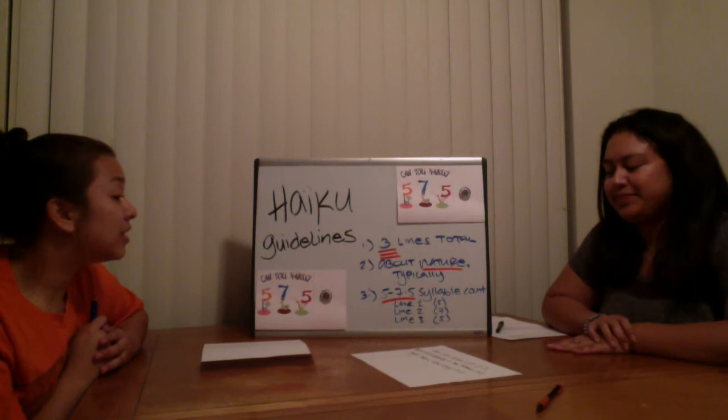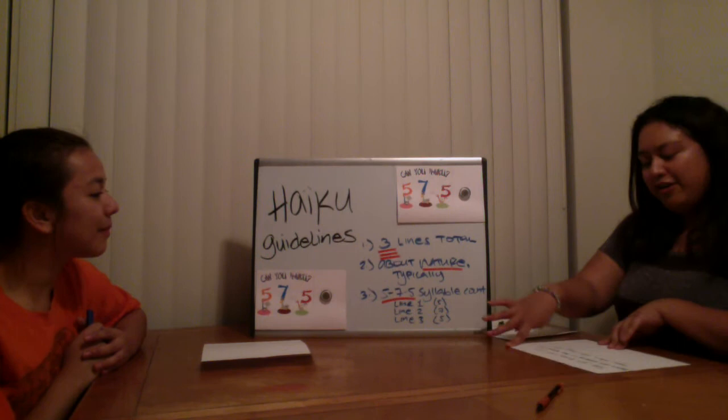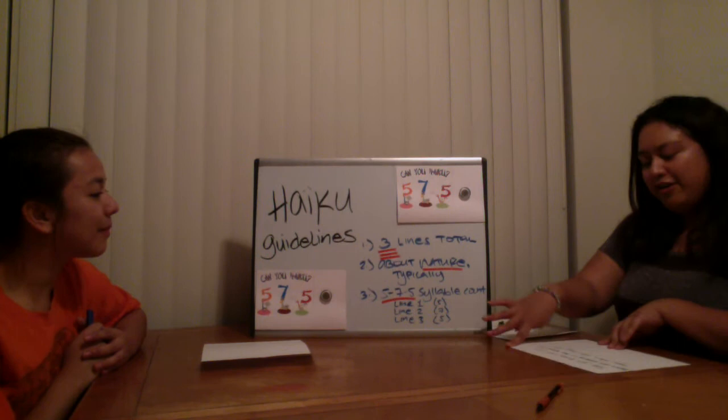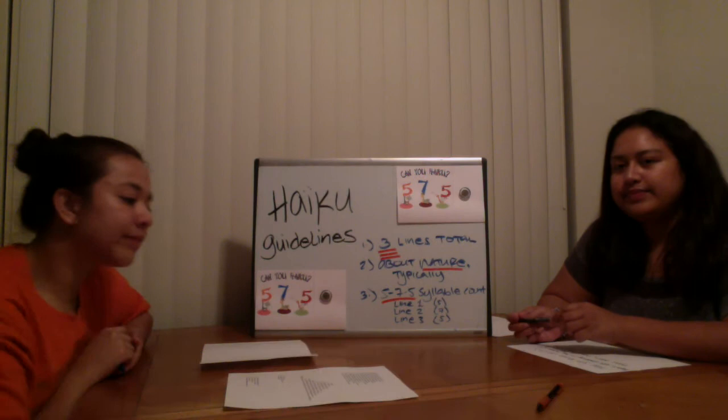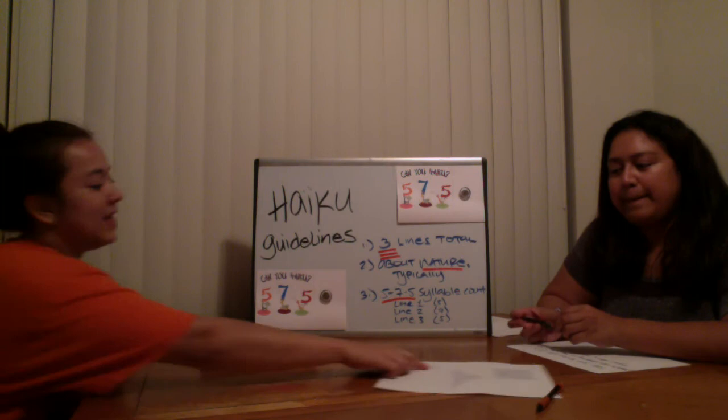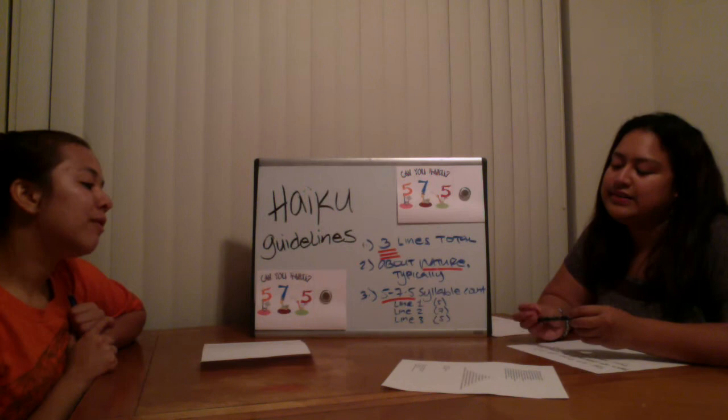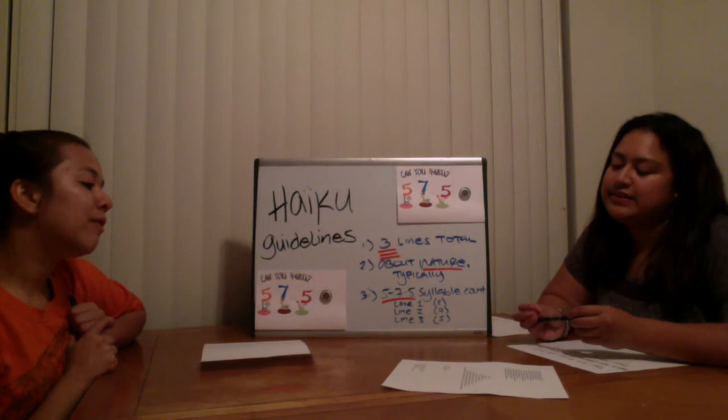And now what I want to do is show you a list of four different poem forms, and I want you to identify the haiku. Is it this one? This one. That is the haiku. And how did you know that was the haiku? Well, first there are three lines. It's about the sky — it's about nature. And the syllable count is five, seven, and four. You are right. Good job.